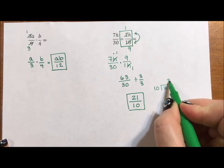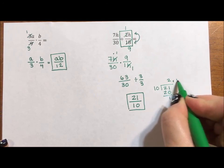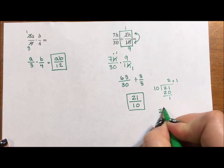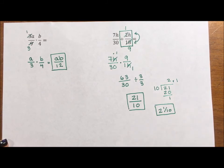10 goes into 20 twice. 2 times 10 is 20. Subtract, remainder of 1. So you would write 2 and 1 tenth. Make sure you know which form you're expected to leave your answer in.